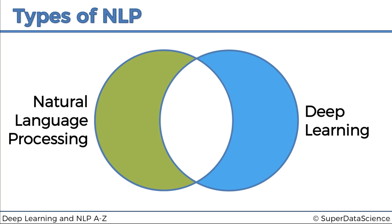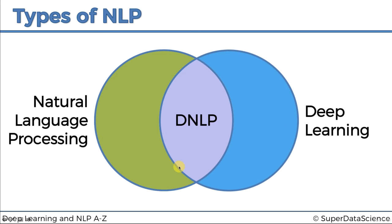And then finally, in the overlap, we have deep NLP. These are models which have to do with natural language processing, but also which are deep learning models, which are neural network models.